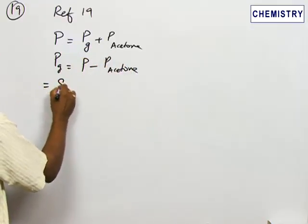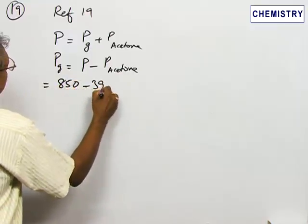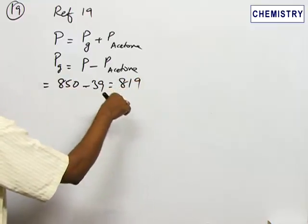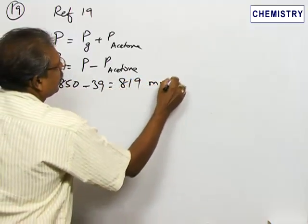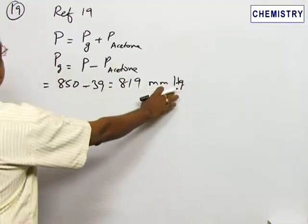Substitute the values: 850 minus 39 is equal to 819 millimeters of mercury. Pressure is expressed here in millimeters of mercury.